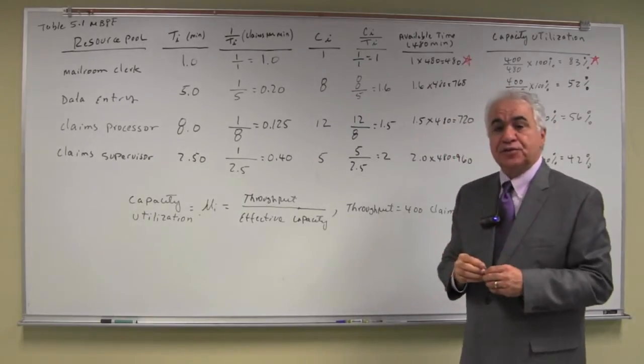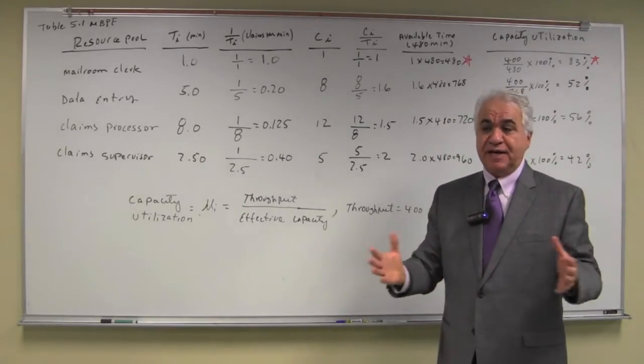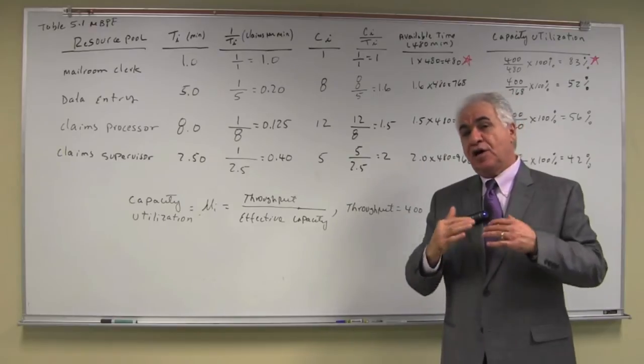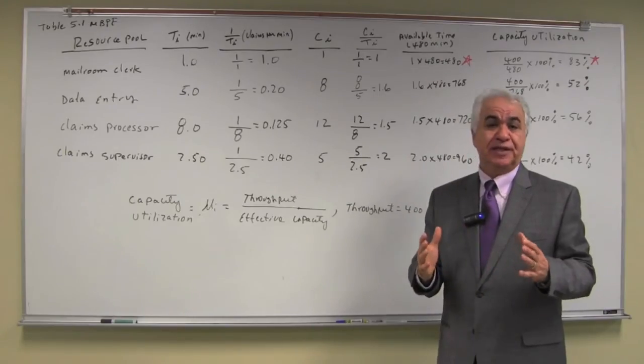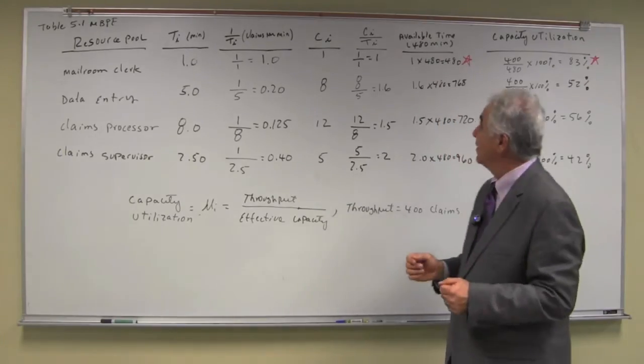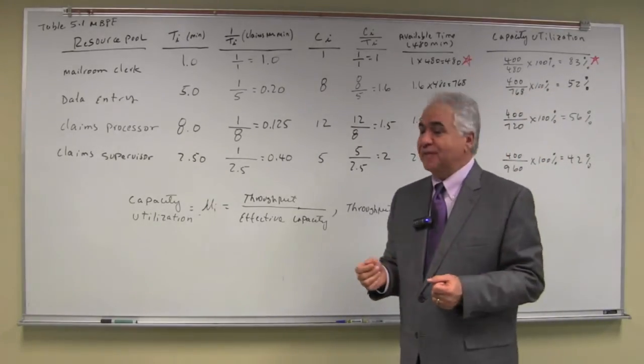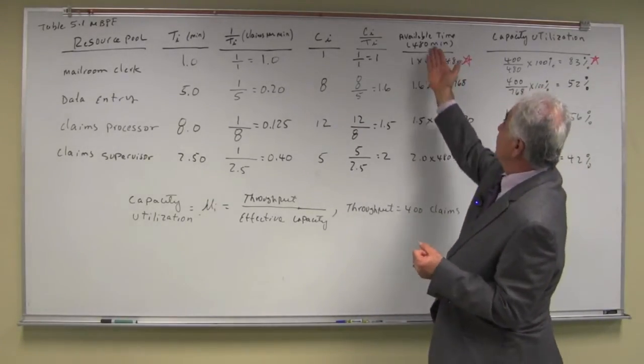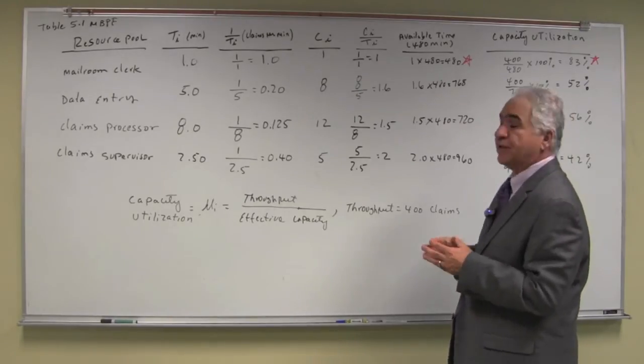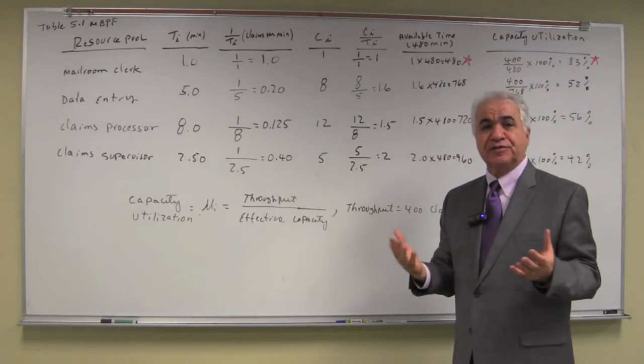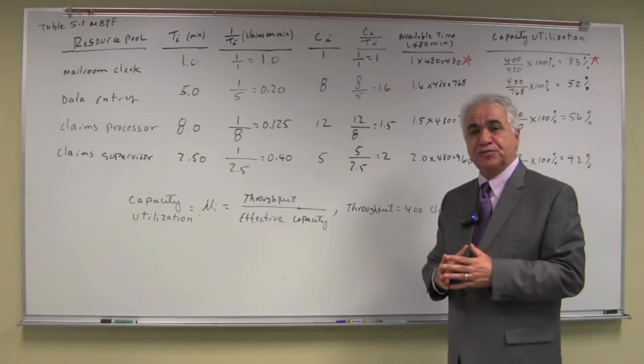Now another element used in determining the effective capacity of a resource pool is how much time each unit has available to do work, known as scheduled availability. Let's assume that we have 480 minutes available for each resource unit and each resource pool.